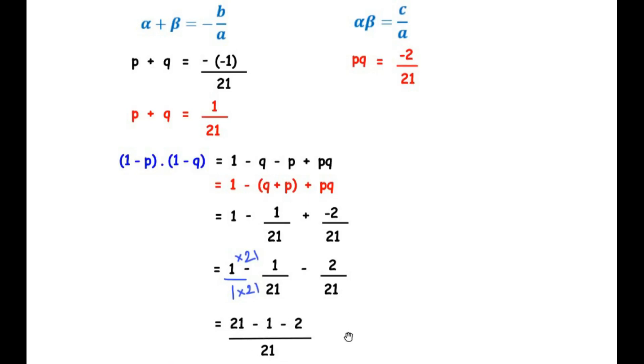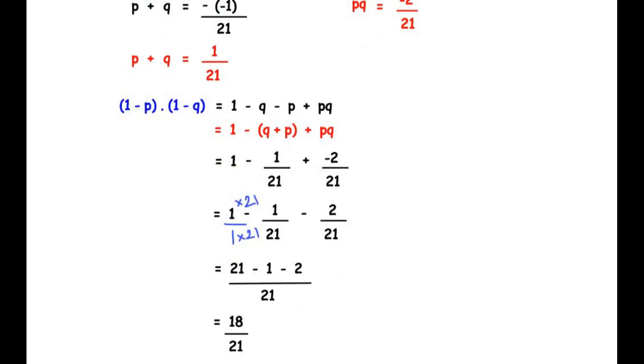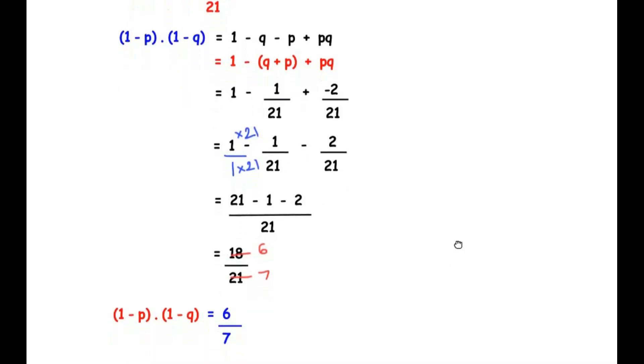So this fraction becomes 18/21. Now 18 and 21 go in the table of 3, that is 3 × 6 is 18 and 3 × 7 is 21. So the value of this expression, that is (1 - p)(1 - q) becomes 6/7. So we have written its value over here.